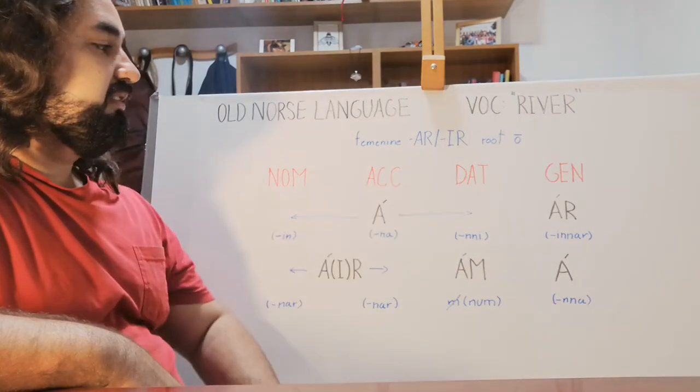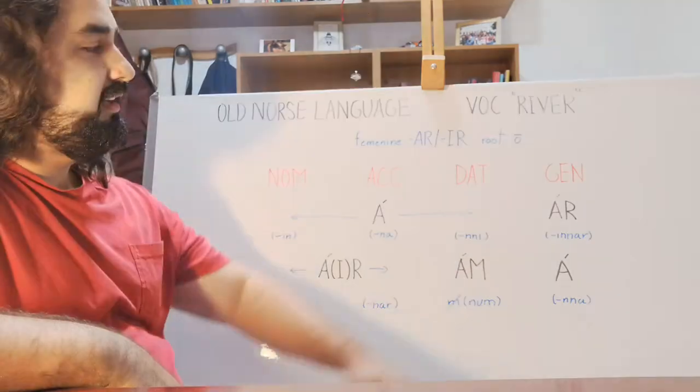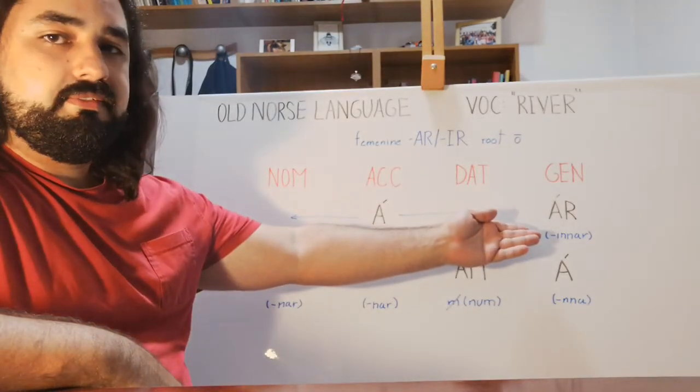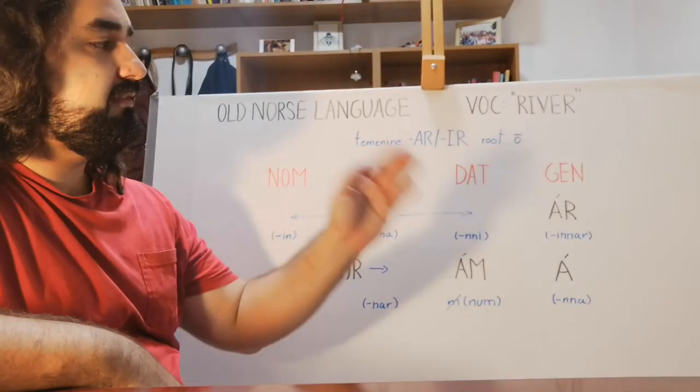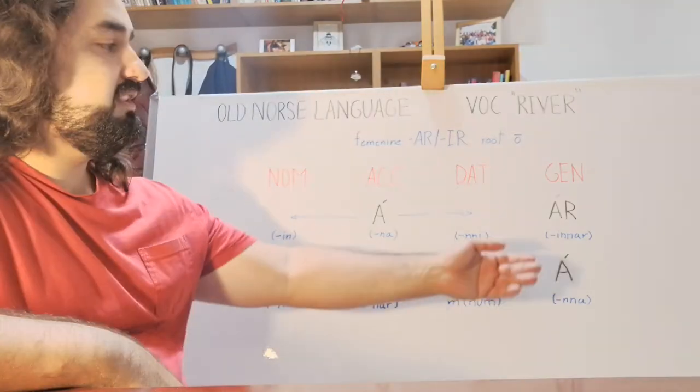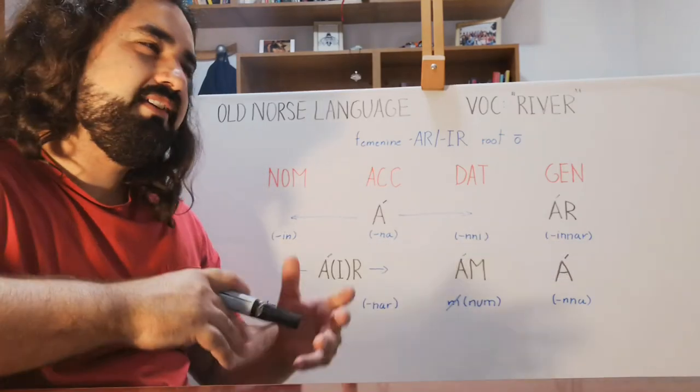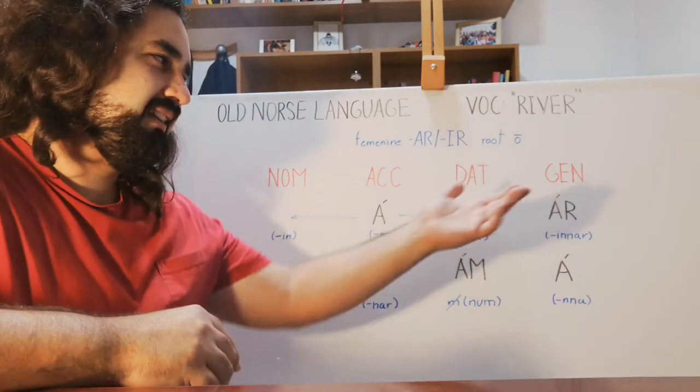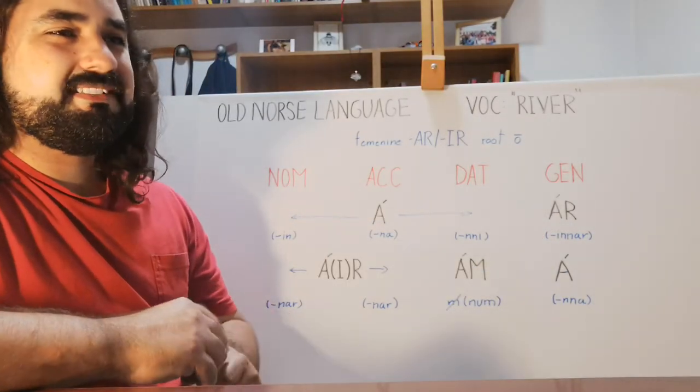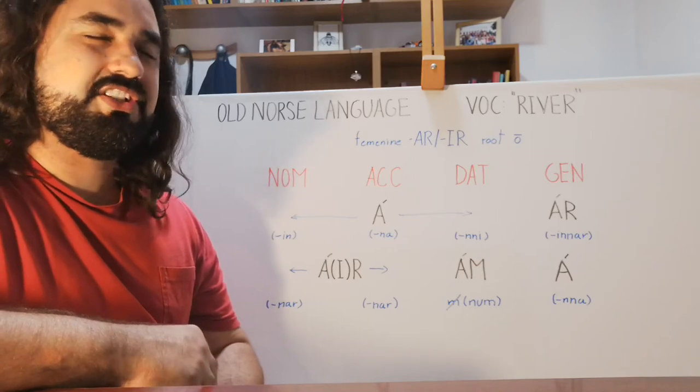And in the genitive singular form, we have the ár. But we also have the form of the article suffixated, which is árinnar. Those who may know a bit of Spanish may find this declension with the article suffixated a bit funny because it is a scatological word, specifically a scatological verb. Let's continue to the plural forms.